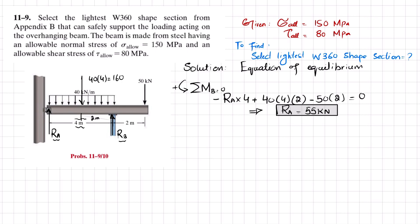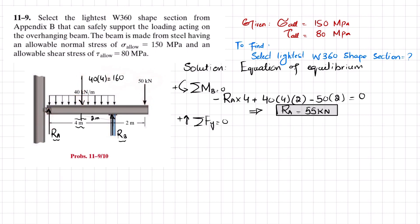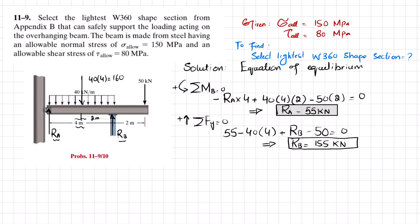Applying the second equilibrium condition: the sum of all forces in the Y direction equals zero, taking upward as positive. Forces: RA (up) + RB (up) − 160 kN (distributed load, downward) − 50 kN (downward) = 0. Substituting RA = 55 kN: 55 − 40×4 + RB − 50 = 0, giving RB = 155 kN.